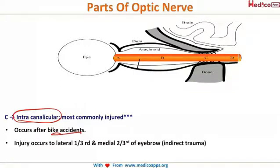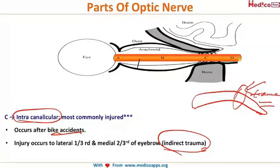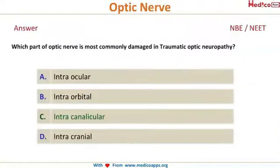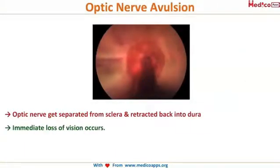The injury occurs at the junction of the lateral one-third and medial two-thirds of the eyebrow. This is a type of indirect trauma where trauma to that region of the eyebrow results in damage to the intracanalicular part of the optic nerve.